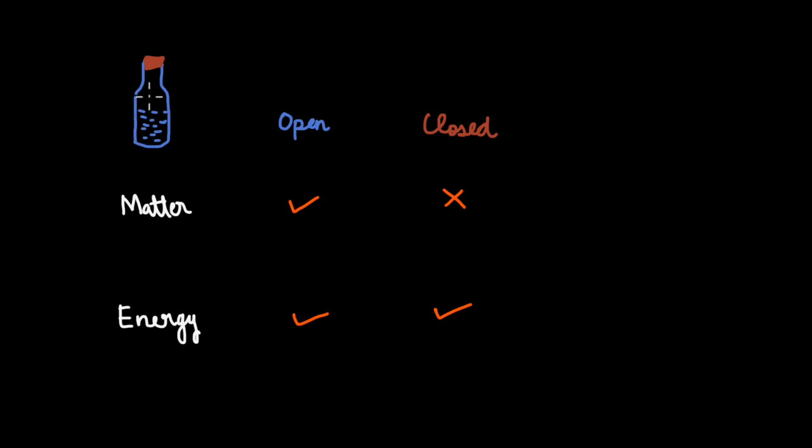What if I want to prevent the exchange of matter and energy? I coat the bottle surface with some insulating material. Because of this insulation, the energy transfer across this boundary is also stopped. There is no transfer of matter nor transfer of energy. Such a system is called an isolated system. Based on whether matter or energy can be exchanged, we can classify systems as open, closed, or isolated.